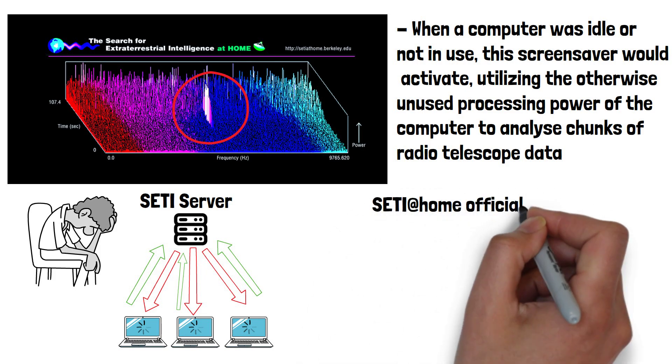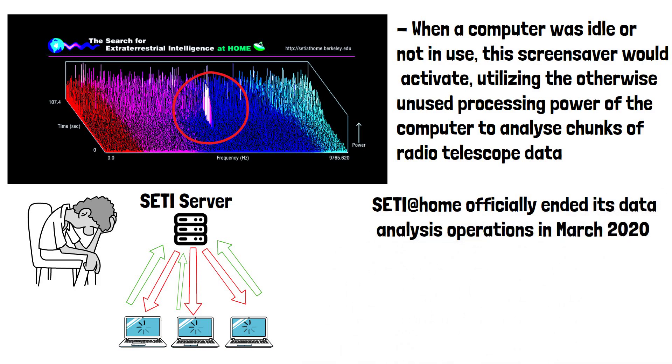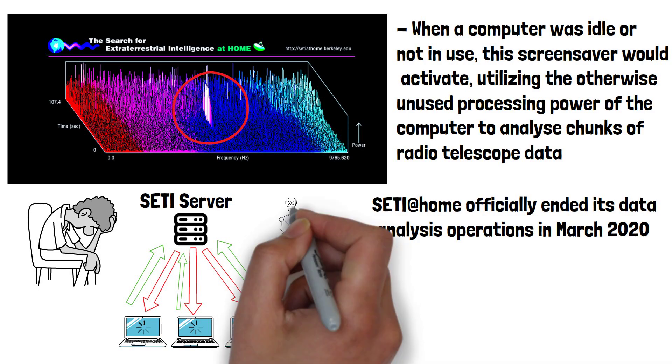SETI at home officially ended its data analysis operations in March 2020. The decision to shut down the project was not due to a lack of interest or support, but rather a strategic shift in how SETI data would be processed and analysed, moving away from distributed computing towards AI and machine learning.